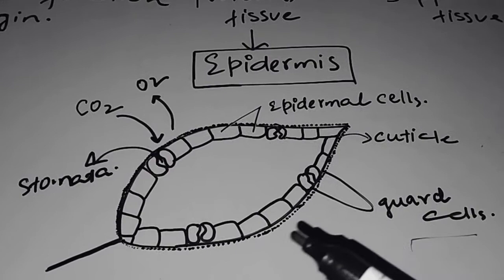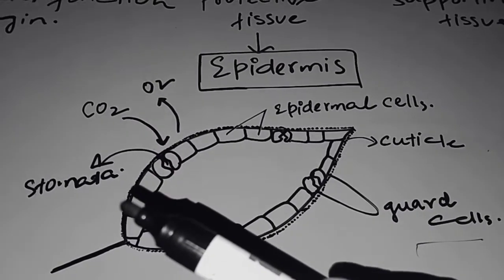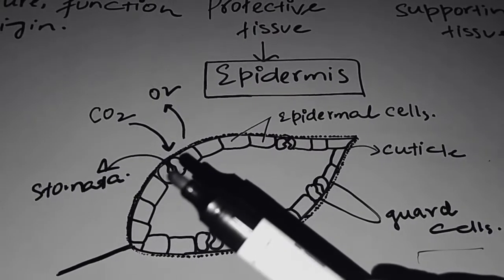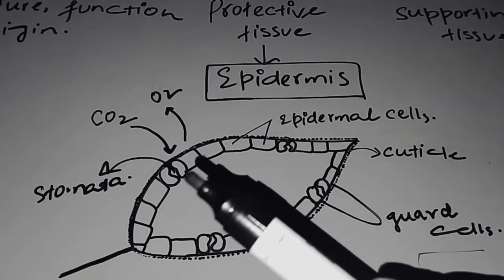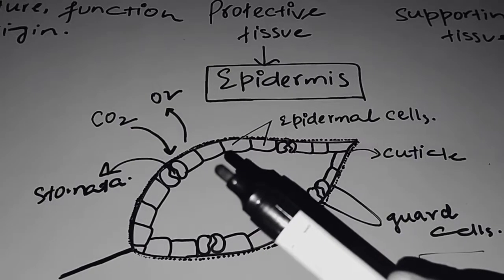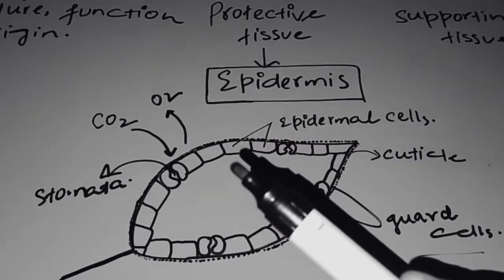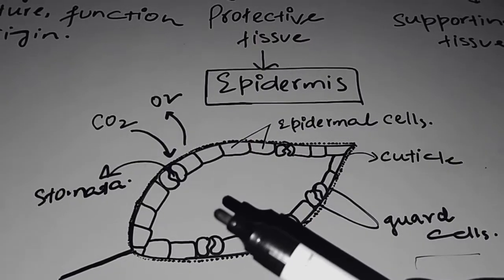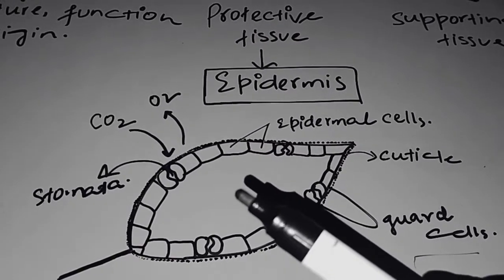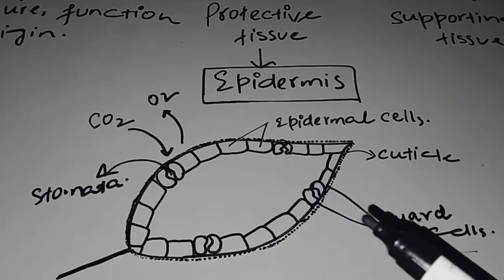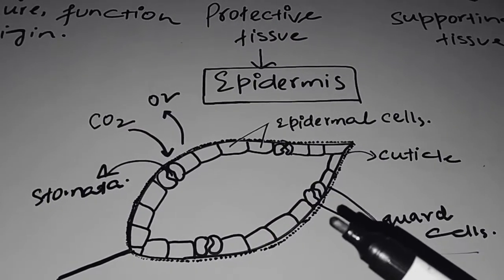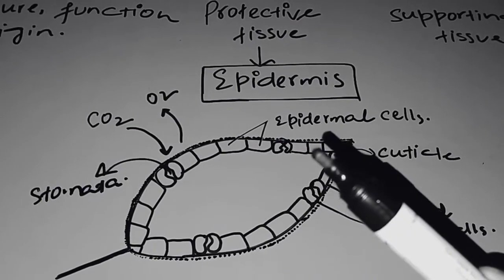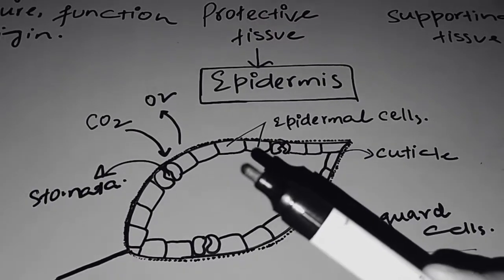Guard cells form pores which are called as stomata. These pores are in leaves. They allow gaseous exchange. Photosynthesis leaves intake carbon dioxide. When photosynthesis is complete, oxygen is generated that comes out through these pores, that is called as stomata. So in the leaves, in addition to epidermal cells, there are present guard cells which form stomata, and through the stomata gaseous exchange takes place.